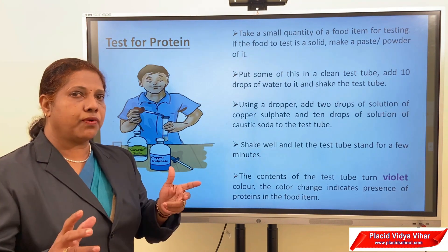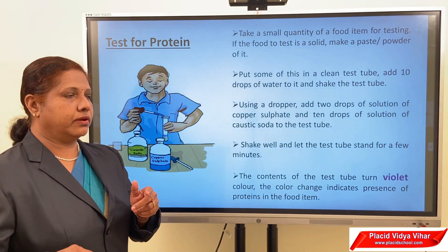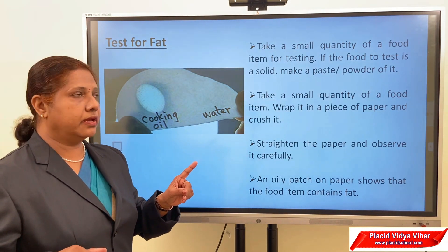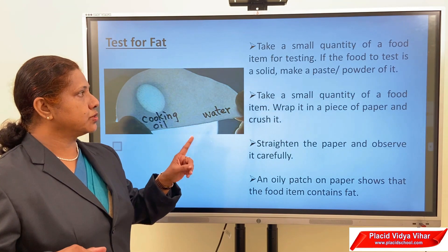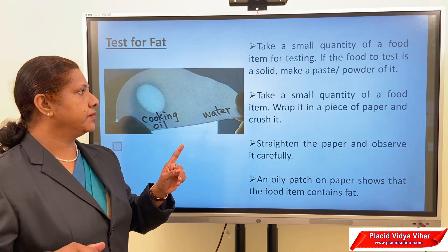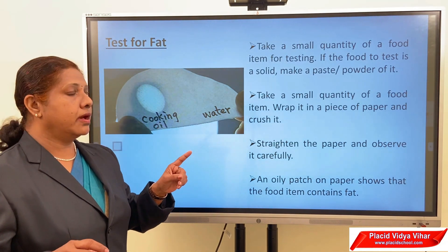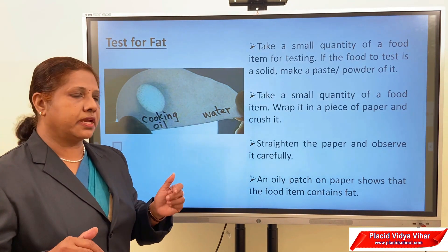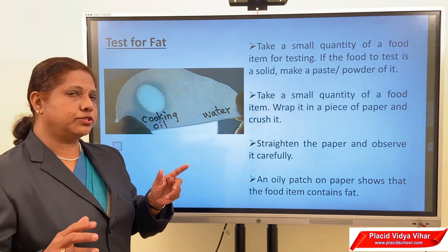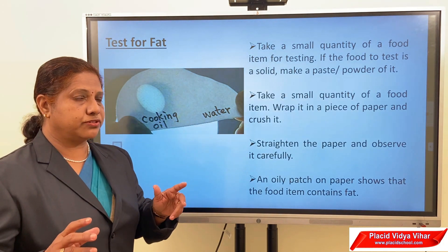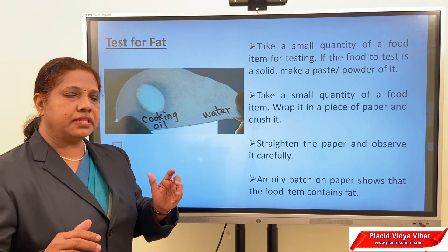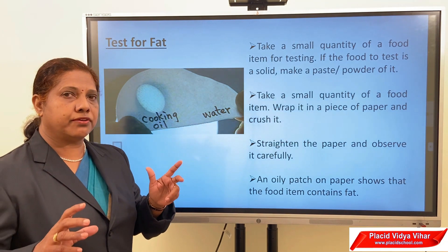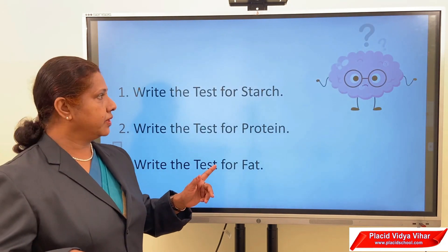If we do the protein test with egg white or milk, it will turn violet because they contain protein. Next, we can test the presence of fat. Take a small quantity of a food item; if it is solid, make a paste or powder. Wrap it in a piece of paper and crush it. Straighten the paper and observe carefully. If an oily patch appears on the paper, that shows the presence of fat.